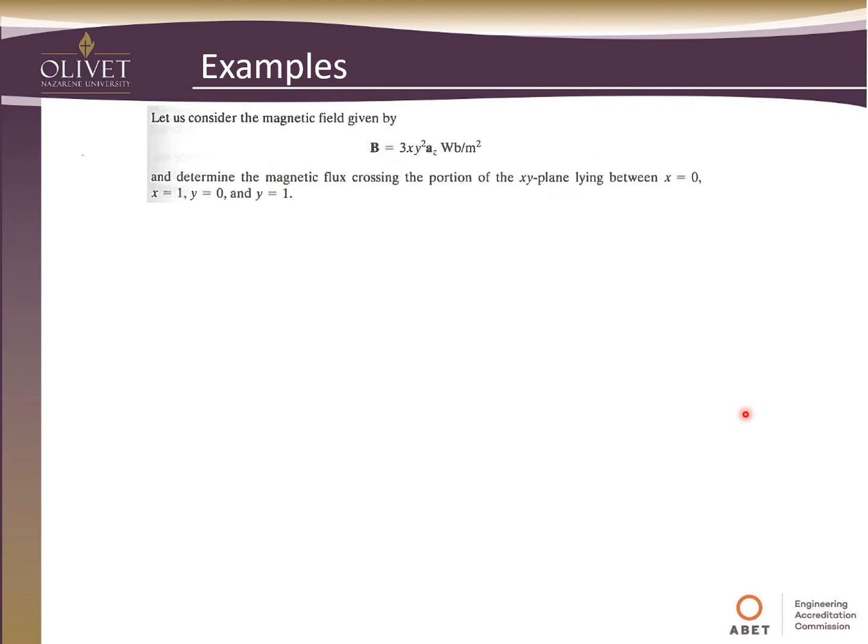Another example, we're going to consider a magnetic field density. It's defined here as 3xy squared and it's all in the z direction. So everything's going in the z direction. And I want to determine the magnetic flux crossing the portion of the xy plane lying between x equals 0 and 1 and y equals 0 and 1.